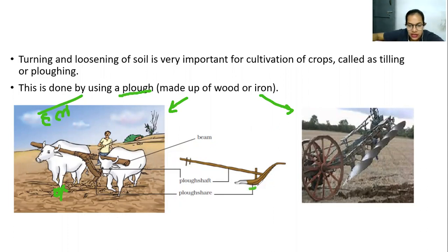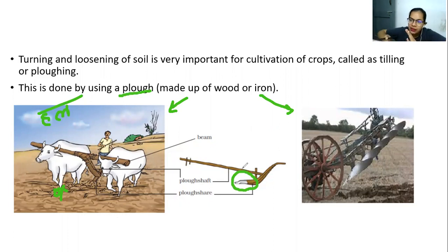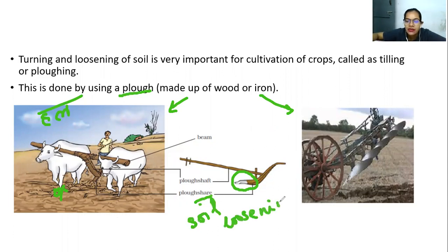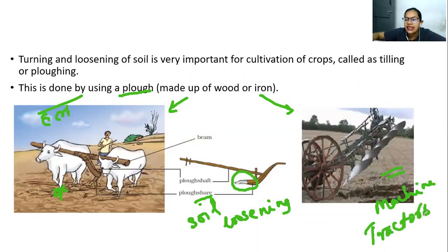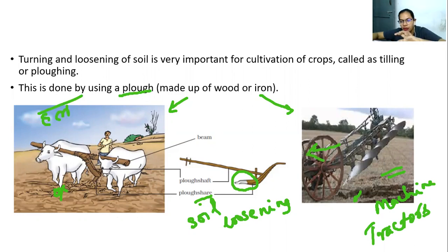The plough share is the portion that you put into the soil. As the animals move forward, the plough keeps moving and loosens the soil. Nowadays, iron-made ploughs are used, attached to tractors, which has made the work very easy. The plough share goes deep into the soil and as the tractor pulls it, it helps in the loosening of the soil.